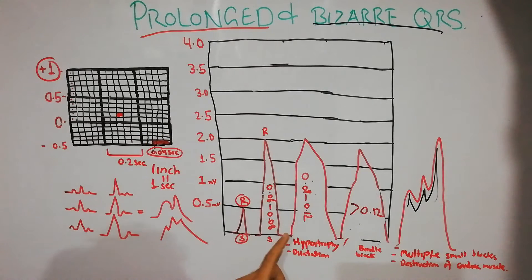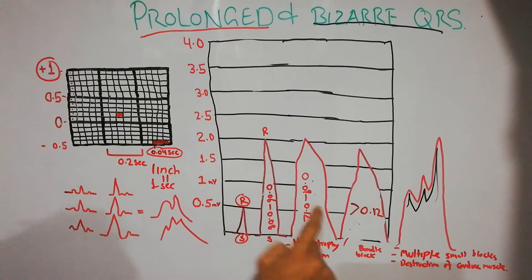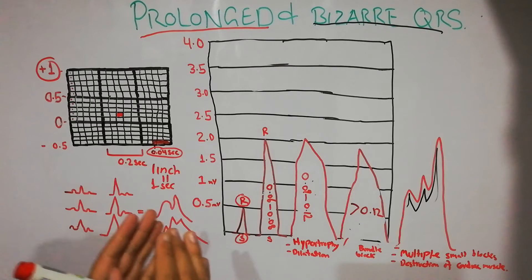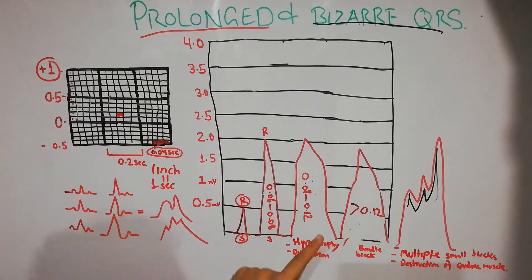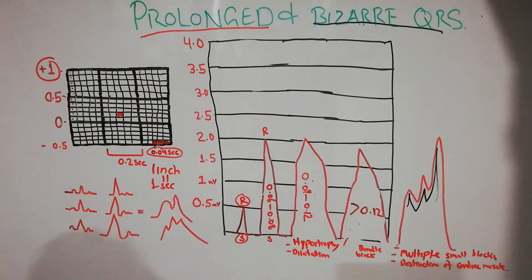This duration is prolonged in certain conditions. Most commonly it is increased in hypertrophy of the left ventricle, hypertrophy of the right ventricle, or dilation of the heart. The QRS duration may increase from 0.09 to 0.12 seconds — about three small squares — because the increased muscle mass means the depolarization current must travel a greater distance, taking more time.